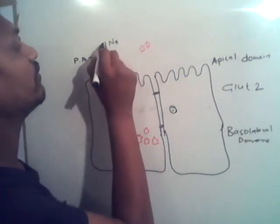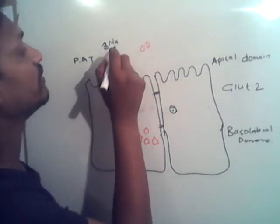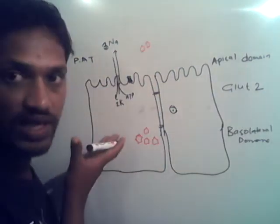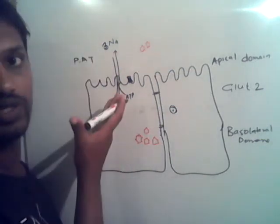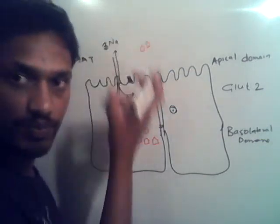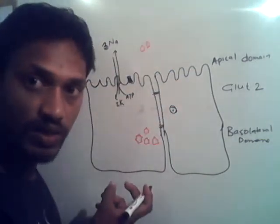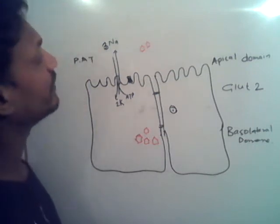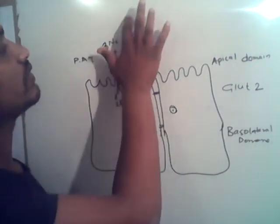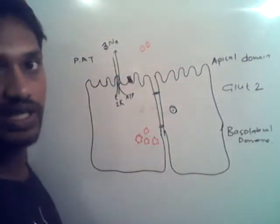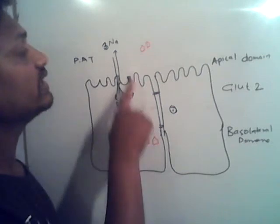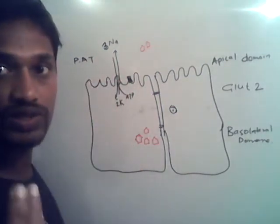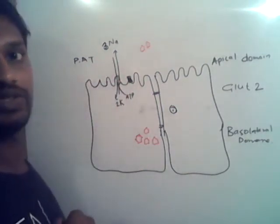Here, a large amount of sodium is present outside. The cell sends sodium outside and brings potassium ions inside, so the concentration of sodium gets increased outside the cell. This concentration increase occurs due to consuming the energy.